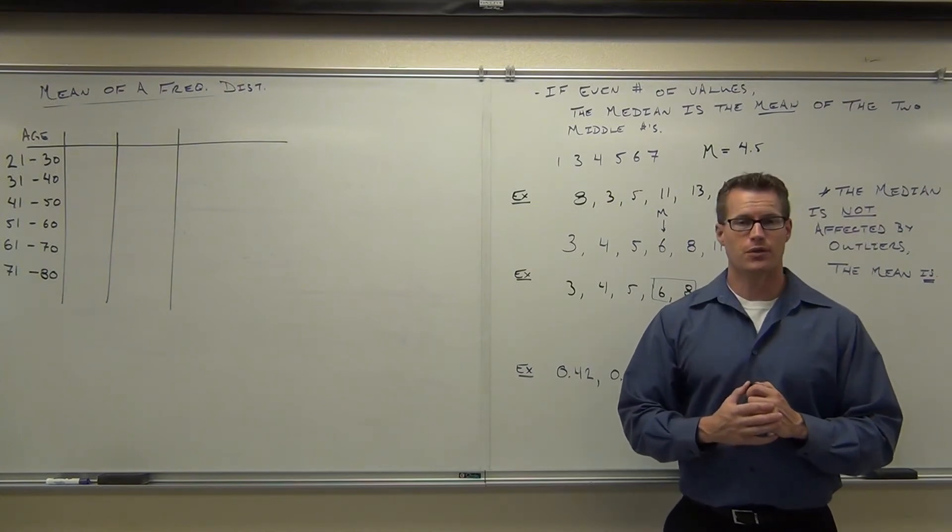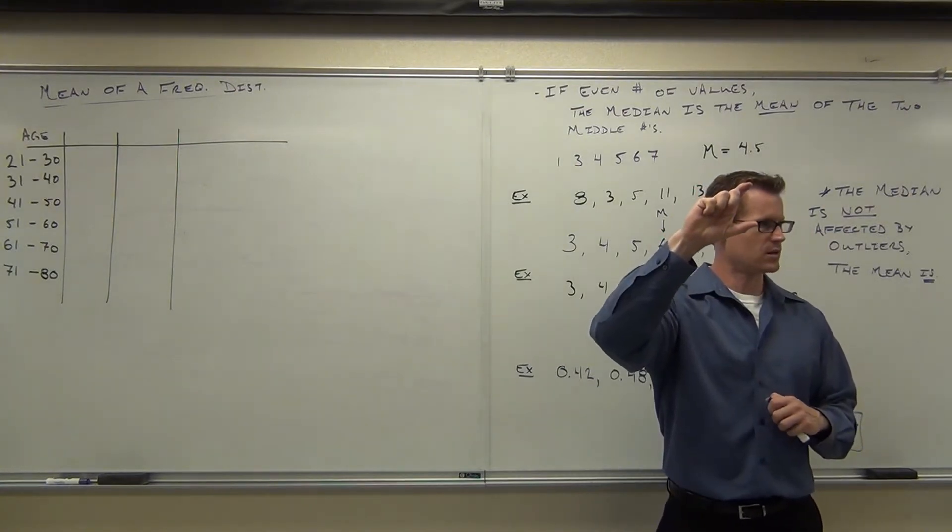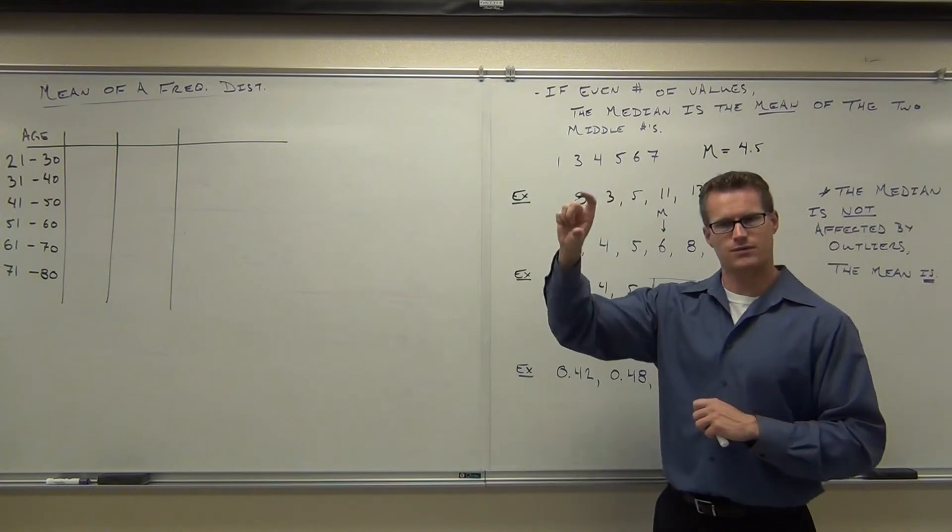What is our class width? Good, it's 10. It's not 9, right? It's 10. It's between the two lower class limits. You got that? So the class width is 10. Good, alright.